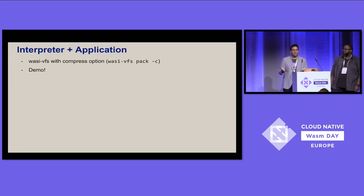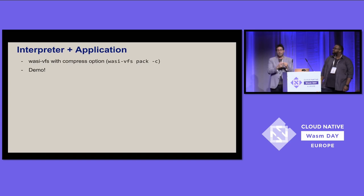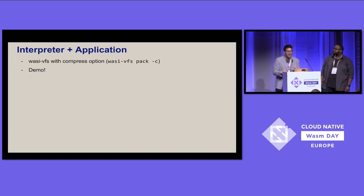For this talk, we experimented with adding compression support to WASI VFS — a feature not yet supported today. In WASI VFS there are two parts: the guest static library you link with your program, and the WASI VFS pack CLI you call from the host. The CLI reads everything you want to mount inside the WebAssembly module and bundles it into the WebAssembly binary itself.